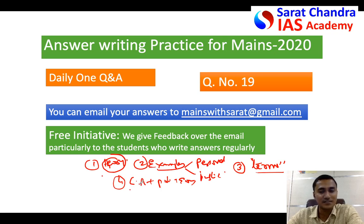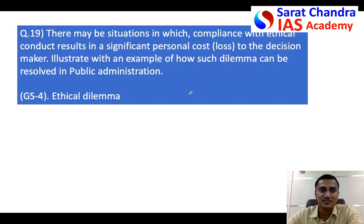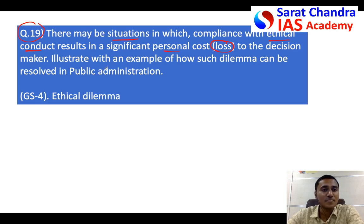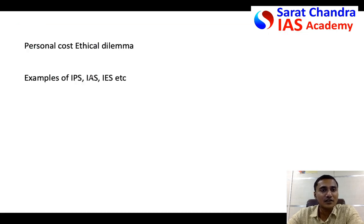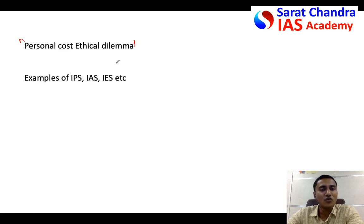Now let's apply these four tips to question number 19. The question is: there may be situations where if you follow ethical conduct, it may affect your personal life — explain how such dilemmas can be resolved in public administration by giving examples. In the introduction itself, you can say this kind of dilemma is called a personal cost ethical dilemma — a dilemma wherein if you follow duty ethics, moral principles, or the rules and regulations of your job, it actually affects your personal life.